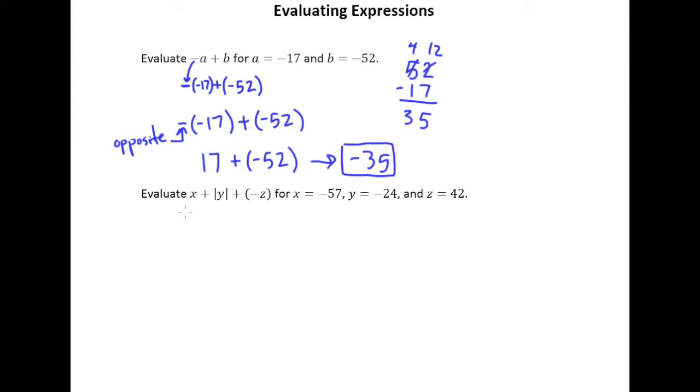So let's take a look at this example here. We have x plus the absolute value of y plus negative z and they give us x, y, and z.